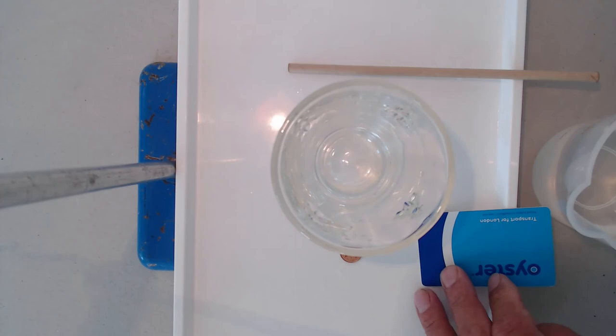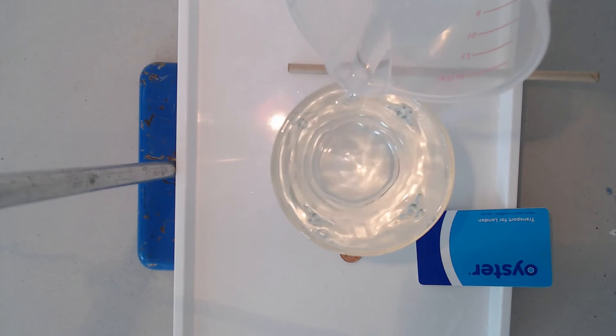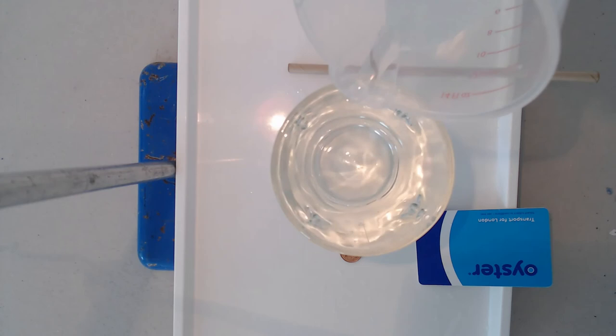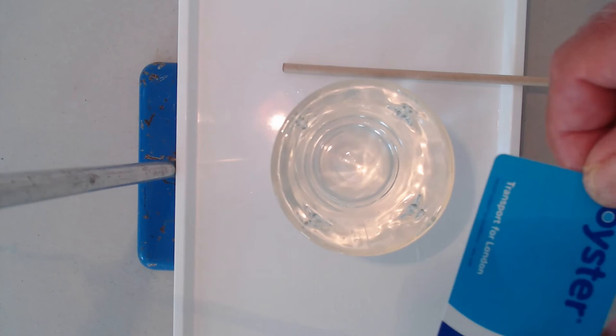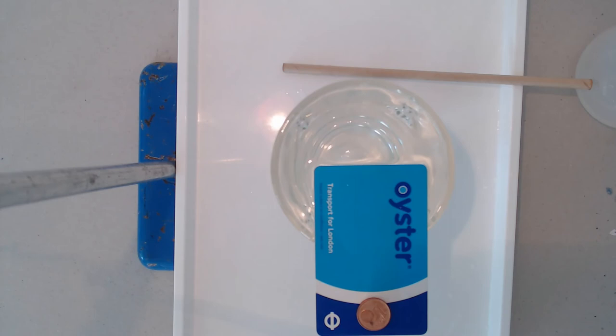But now I'm going to fill the glass with water. And I really do mean fill it, I'm going to get it right up to the edge. Like this, right to the top. Here we are. And I'm now going to put the coin back on the card and replace the card hopefully on the surface of the water. And it's balanced.